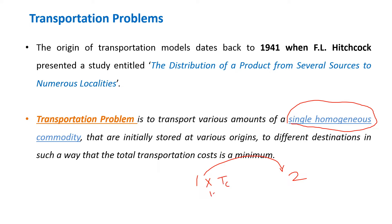If you take different commodities — heterogeneous commodities like X, Y, Z — they will have different costs of transportation. Because of that, calculating the transportation cost would not be possible. So you need to consider a single homogeneous commodity to calculate the transportation cost from various origins to different destinations, in order to get the total transportation cost as a minimum value.